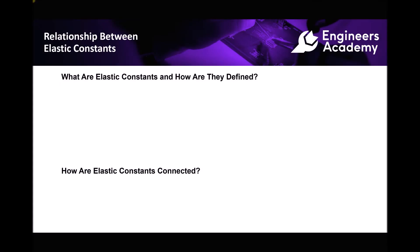Hello, this is Andy from the Engineers Academy and in this video we're going to be discussing some of the relationships between elastic constants. And by elastic constants what we mean are some of the properties of various different materials, things such as elasticity, rigidity and so on. We're going to begin by looking at each of the elastic constants and how they're defined, and then we're going to move on to look at some of the equations that are used to connect these elastic constants together.